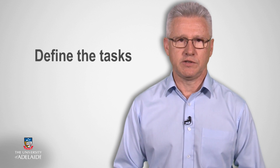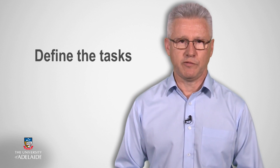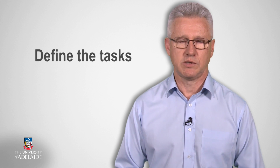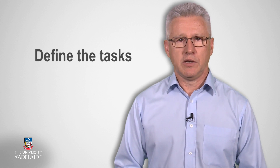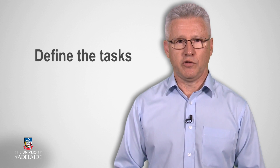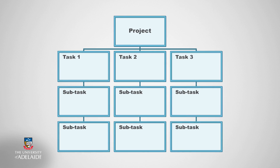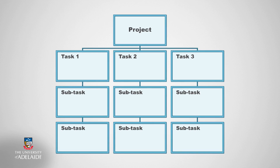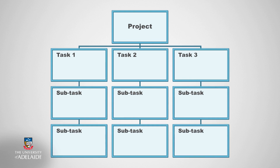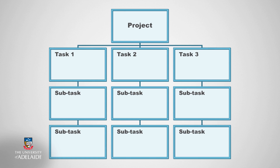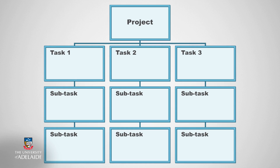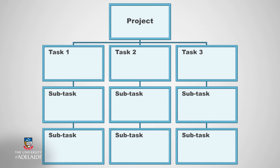First, you need to define the tasks that need to be performed to produce the project deliverables or outcomes. These actions must relate to the deliverables as determined in your work breakdown structure. If a task does not fit with the work breakdown structure, then either the activity is unnecessary or something has been left out of the work breakdown structure.